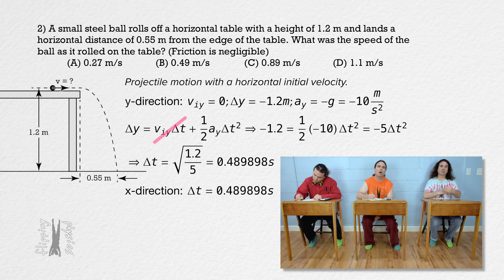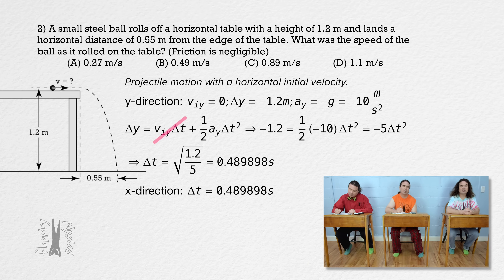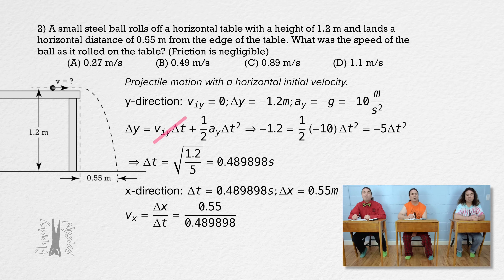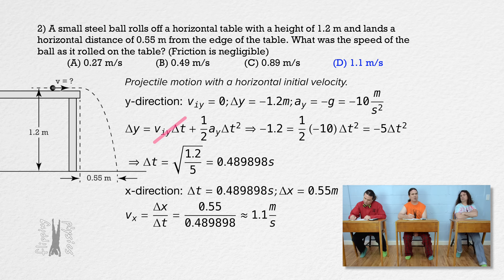That change in time is independent of direction. In the x direction, the displacement equals 0.55 meters. Using the equation for constant velocity, that equals x displacement over change in time, or 0.55 over 0.4899, which is roughly 1.1 meters per second, so choice D is correct. The problem states that friction is negligible, so the horizontal speed on the table will be the same as the horizontal speed off the table.